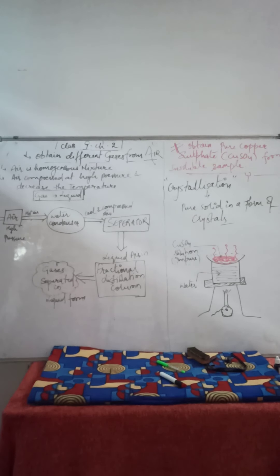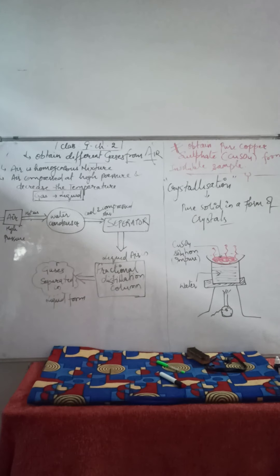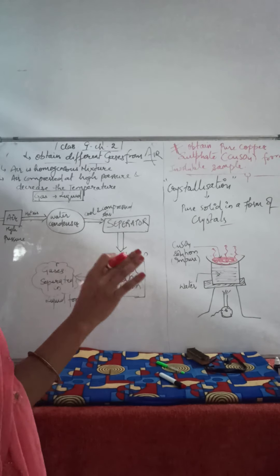Air contains gases like oxygen, nitrogen, argon, carbon dioxide, and water vapor, and they are all present in air in a fixed proportion. Their percentages are fixed.